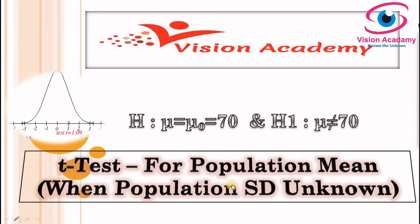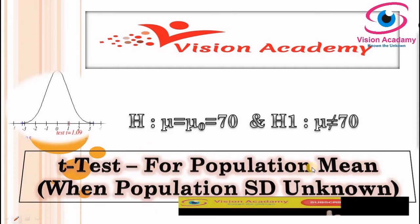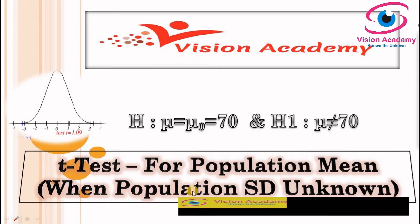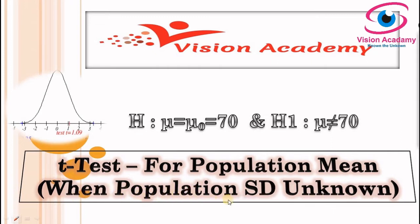This is a second video on t-test for testing of hypothesis for population mean. In this video, I will address how to test a hypothesis using t-test when population standard deviation is unknown. Videos relating to testing of hypothesis, setting of null and alternative hypothesis, how to obtain a critical value, significance level, one-tailed and two-tailed tests, and z-test are also available in the description box.